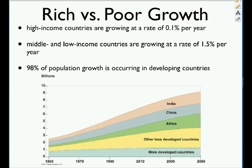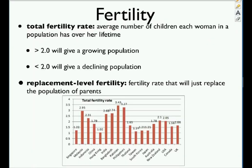High-income countries are growing at 0.1% per year while middle and low-income countries grow at 1.5% per year. Ninety-eight percent of population growth is occurring in the poorest developing countries, meaning even less money to go around. A major reason is lack of birth control and women's education — more educated women tend to delay having children, which isn't happening in many developing countries.